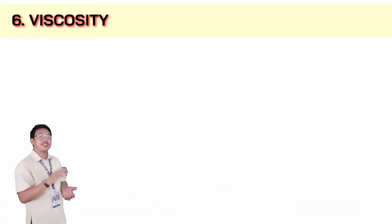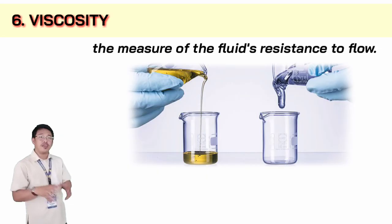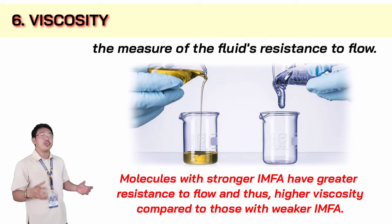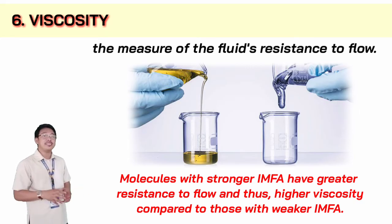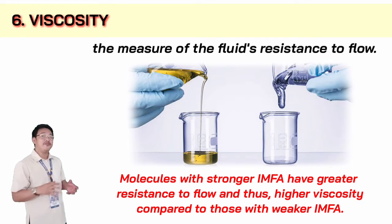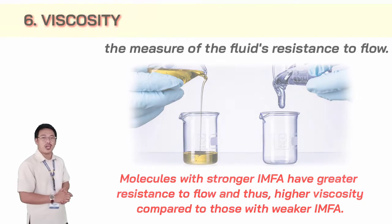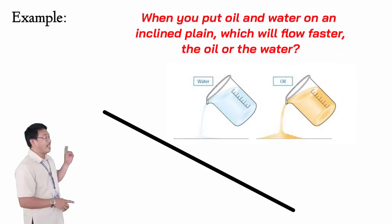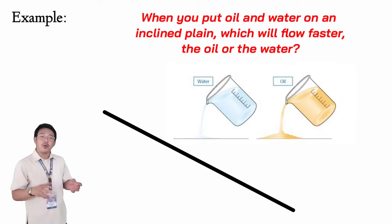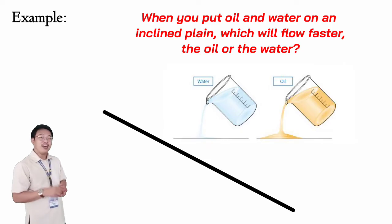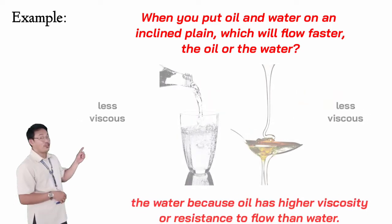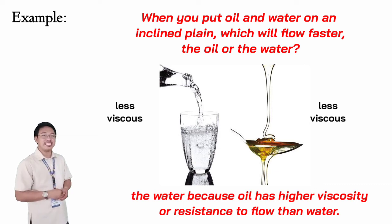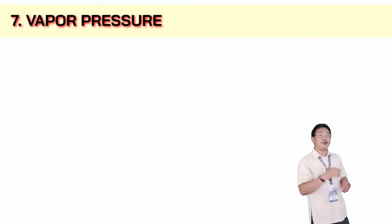We also have viscosity. Viscosity is the measure of a fluid's resistance to flow. Molecules with stronger intermolecular forces have greater resistance to flow and thus higher viscosity. For example, when you put oil and water on an inclined plane, water flows faster because oil has higher viscosity, or greater resistance to flow, than water.